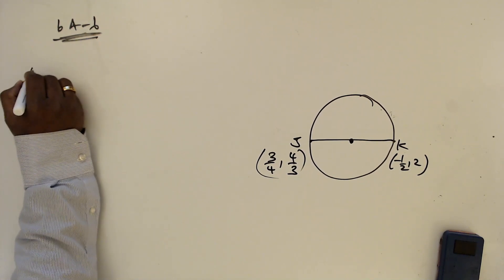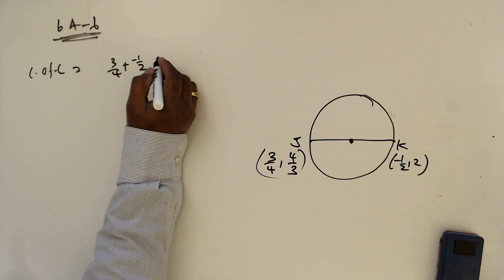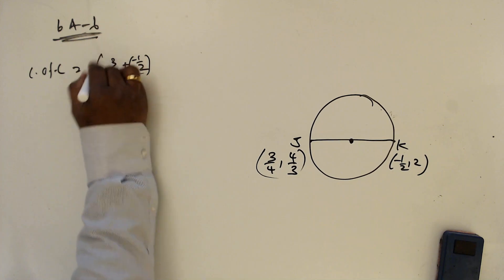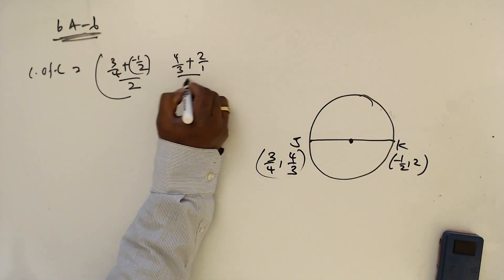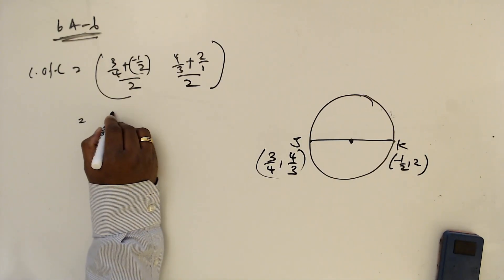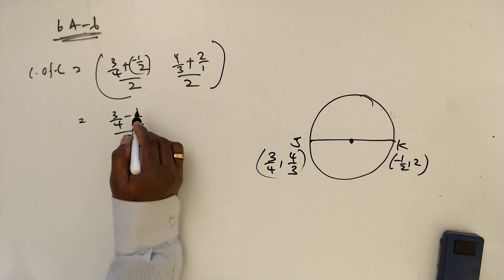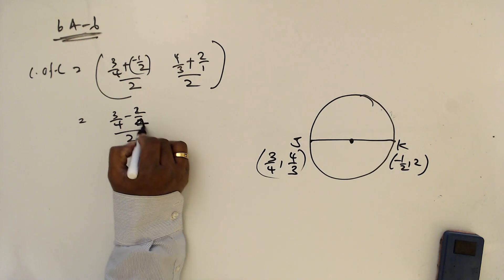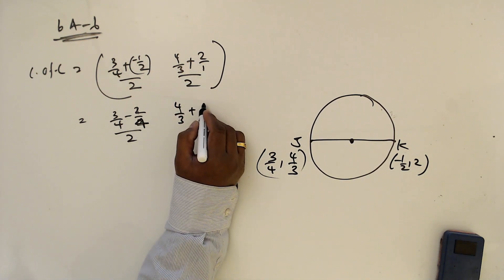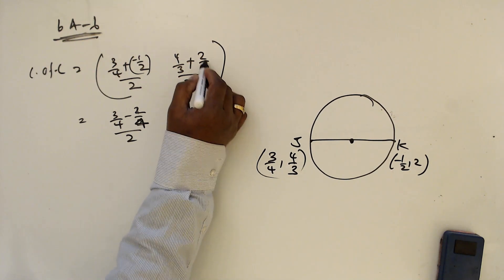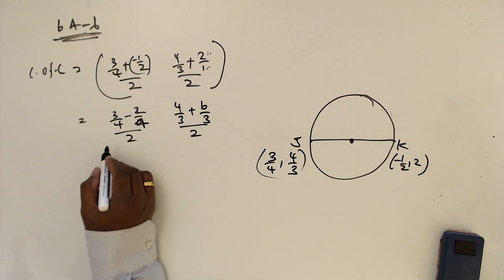The center of the circle is the midpoint of JK. So we calculate: (3/4 + (-1/2)) / 2 and (4/3 + 2) / 2. For the x-component: 3/4 minus 1/2 — converting to a common denominator, half is 2/4. For the y-component: 4/3 plus 2, writing 2 as 6/3 by multiplying numerator and denominator by 3, giving 4/3 + 6/3 = 10/3, then divide by 2.